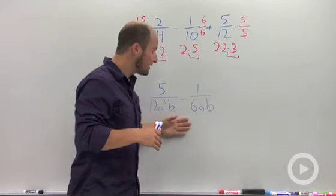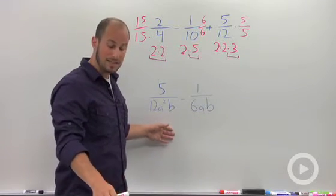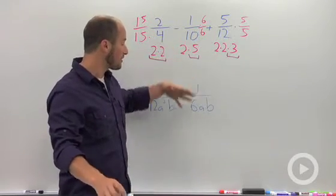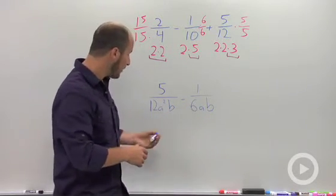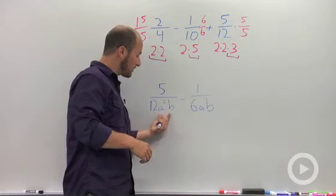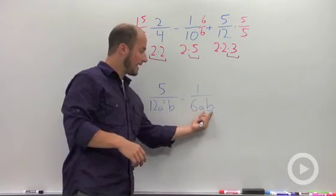Same idea for with rational expressions, except instead of dealing with just numbers, you're going to be dealing with variables and factors and things like that. So looking at this, we have 12a squared b and we have 6ab.